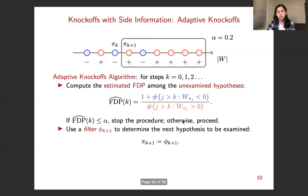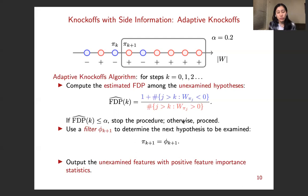Otherwise it proceeds and uses a filter phi k plus one to determine the next hypothesis to be examined. So by such construction, if we're able to put more red balls towards the end of the ordering, we can stop the procedure earlier and make more discoveries.